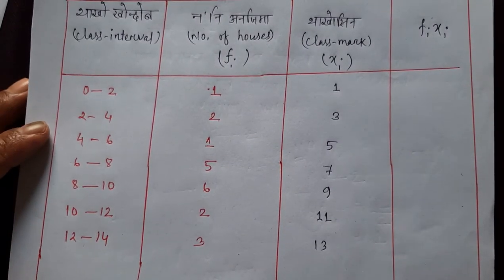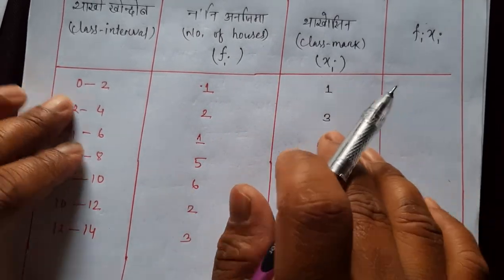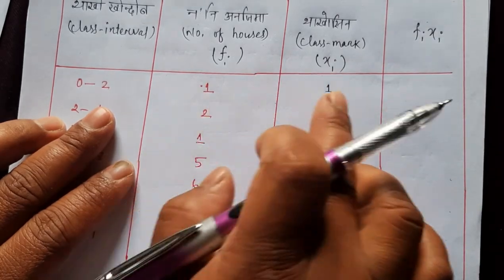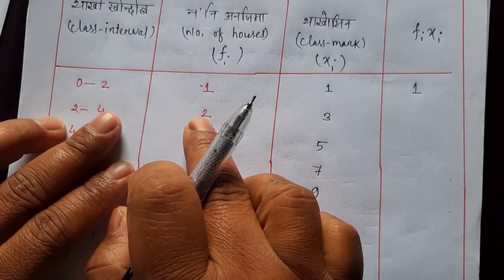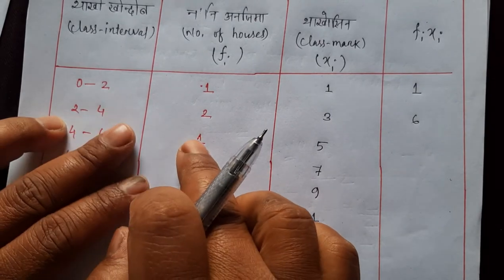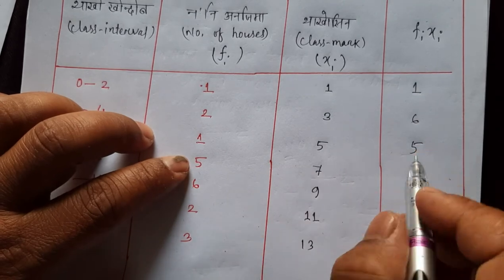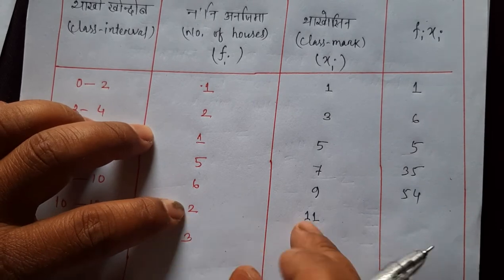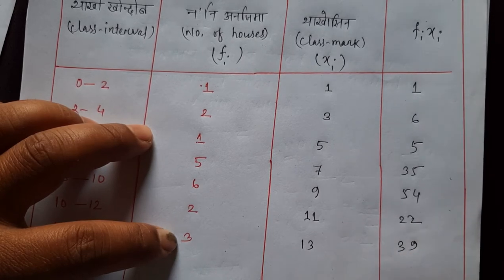Now we find fi times xi. fi times xi means we multiply fi by xi. fi is 1, xi is 1, so fi·xi is 1. fi is 2, xi is 3, so 2 times 3 is 6. fi is 1, xi is 5, so 1 times 5 is 5. 5 times 7 is 35. 6 times 9 is 54. 2 times 11 is 22. 3 times 13 is 39.